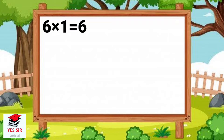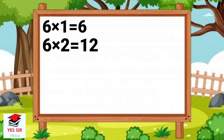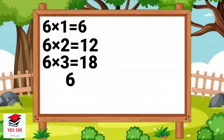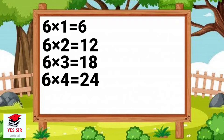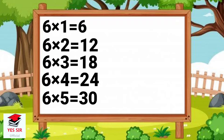Now let's see: 6 1's are 6. 6 2's are 12. 6 3's are 18. 6 4's are 24. 6 5's are 30.